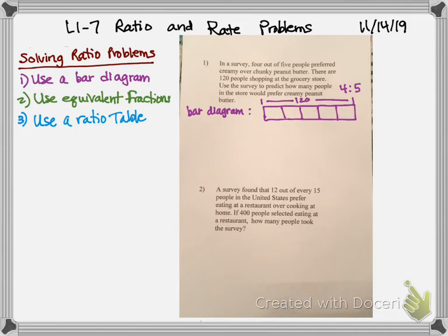And the ones that chose creamy are going to be four of those sections. Those are the creamy people. Which makes this little section here going to be the chunky people. So what I'm going to do is I'm going to take 120 and divide it by five. So I know what goes into each one of those boxes. So five goes into 12 twice, which is 10 with two left over. And five goes into 20 four times evenly.